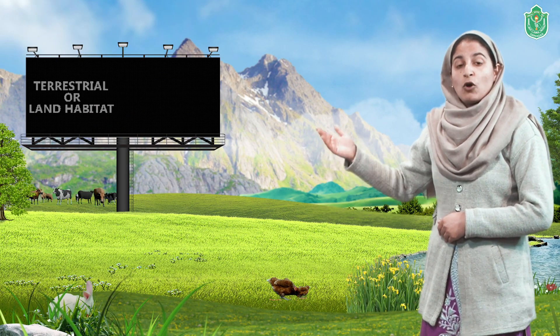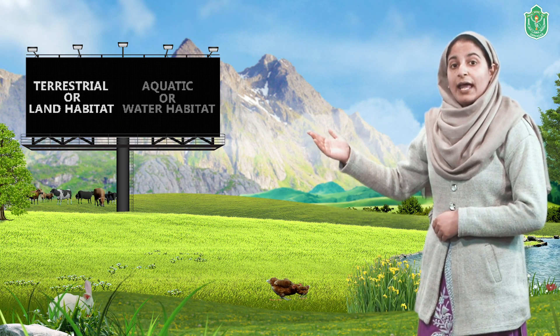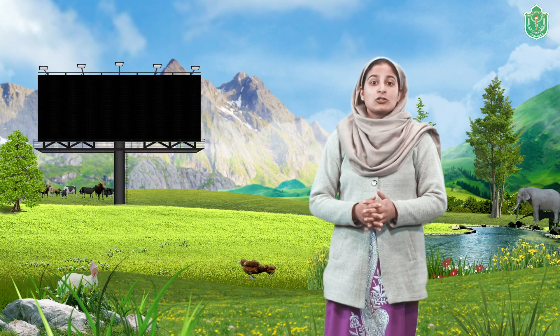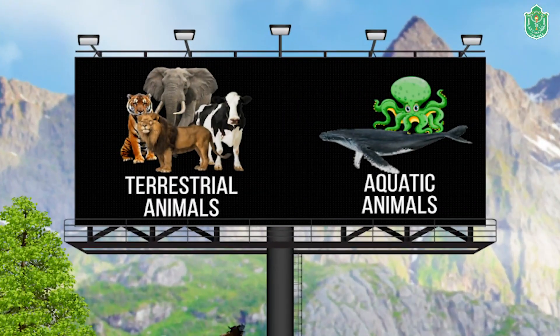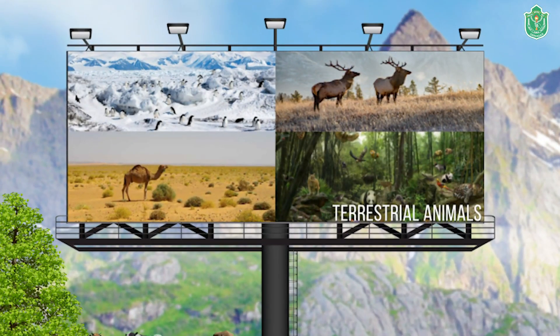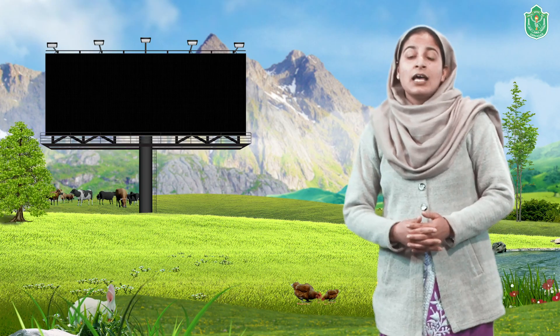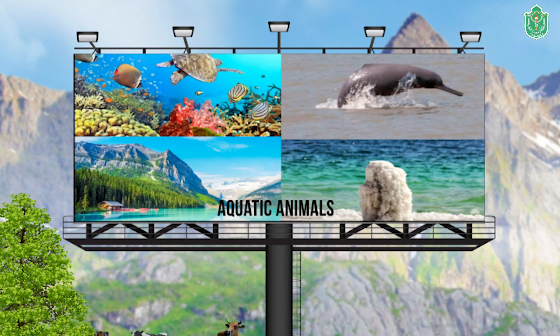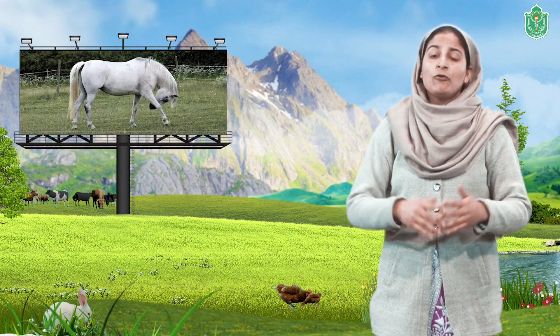Broadly speaking, habitats are mainly of two categories: terrestrial or land habitat, and aquatic or water habitat. Animals living on land are called terrestrial animals, and those living in water are called aquatic animals. Terrestrial habitat includes polar regions, mountains, deserts, and forests, while aquatic habitat includes oceans and rivers — mainly freshwater and saltwater bodies. A habitat doesn't have to be large; even a small puddle or a single tree can be a habitat for a variety of organisms.